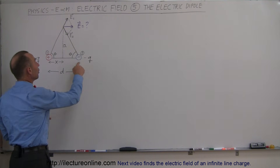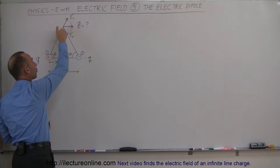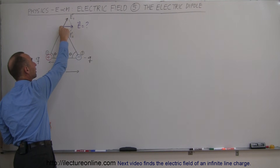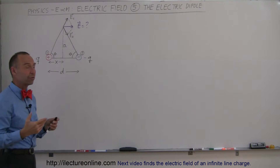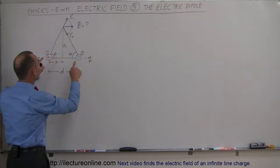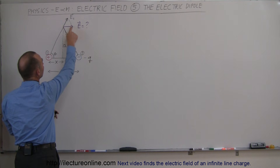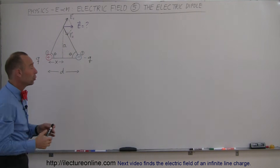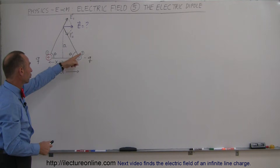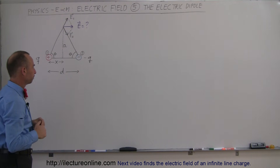We know that for negative charges, electric fields are directed towards the charge. So the electric field at this same location due to the negative charge is in the opposite direction. The total electric field experienced at this location will then be to the right, which is simply the vector sum of E1 and E2. I call the positive charge 1 and the negative charge 2.